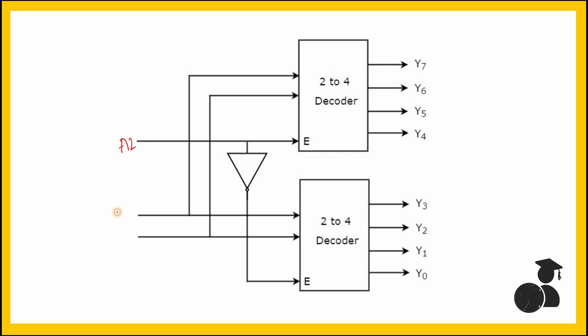A2, A1, and A0. A1 and A0 will be given to the A1 and A0 of both of these decoders. Now we have generated a 3-to-8 decoder by using two 2-to-4 decoders.